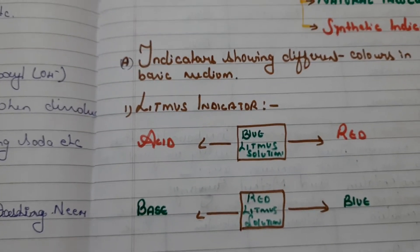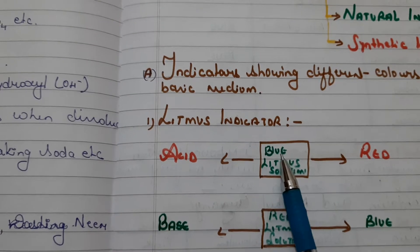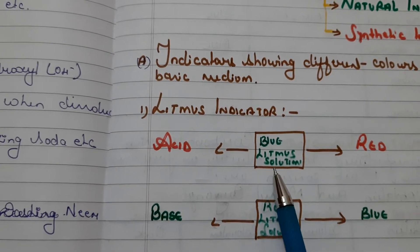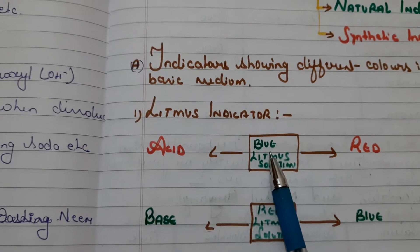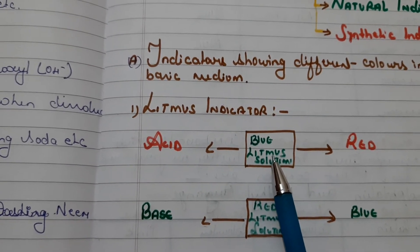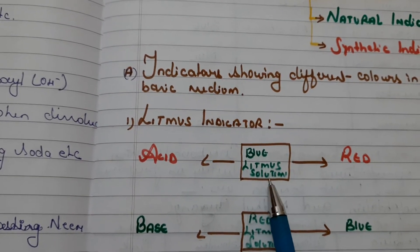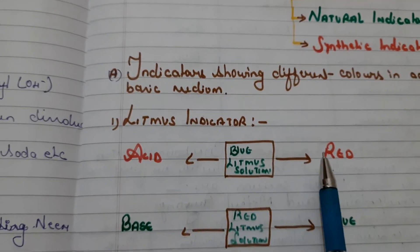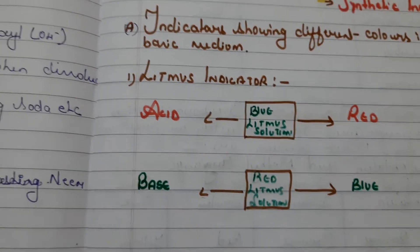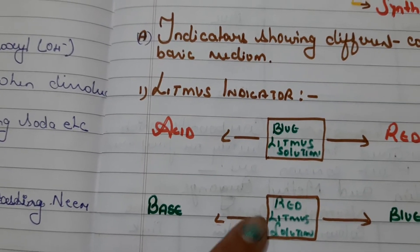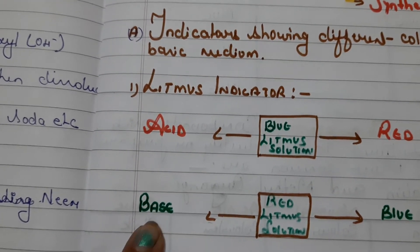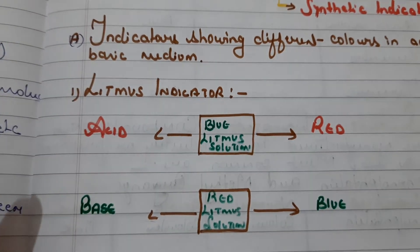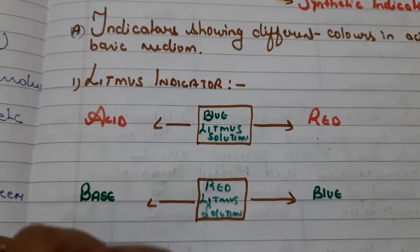The well-known example is the litmus indicator. If we prepare blue litmus solution and place it in an acidic medium, it will turn red. On the other hand, if we place red litmus solution in a basic medium, it will turn blue. So litmus turns red in acidic medium and blue in basic medium.